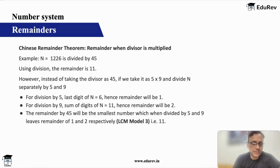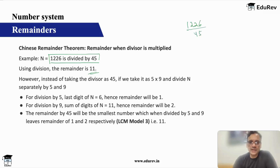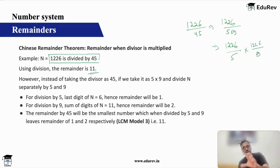This again becomes very useful. Look at this question: 1226 is divided by 45. I normally divide and get a remainder of 11. What I can do is since 45 is 5 times 9, can I divide 1226 by 5 separately and by 9 separately, and then combine? That is where the Chinese Remainder Theorem comes in. It is not as simple as the dividend case — slightly more complicated, but a very useful concept.